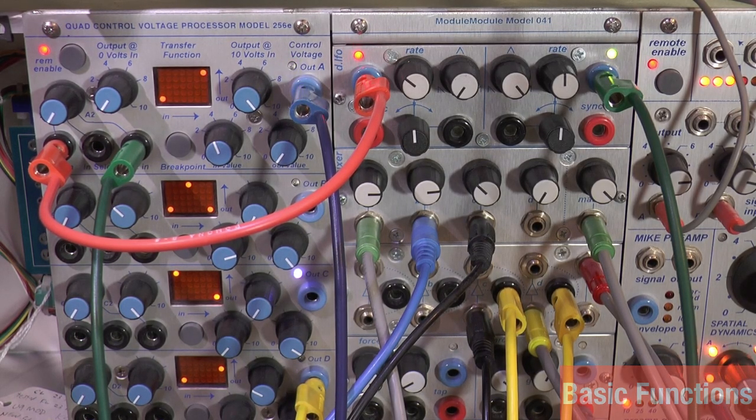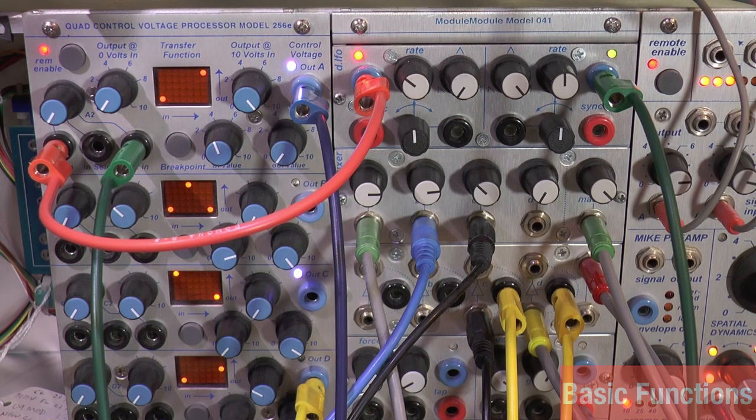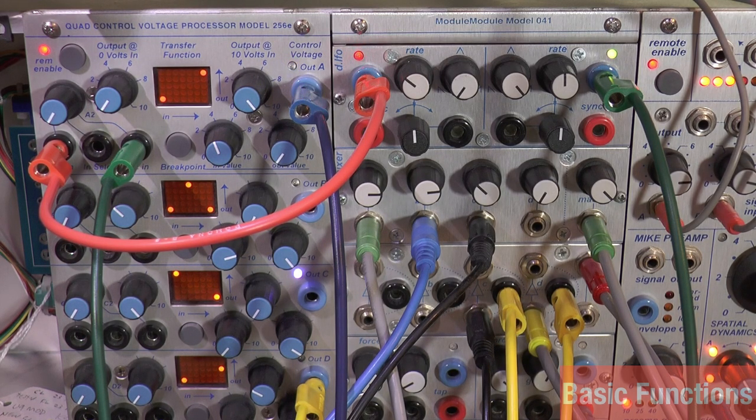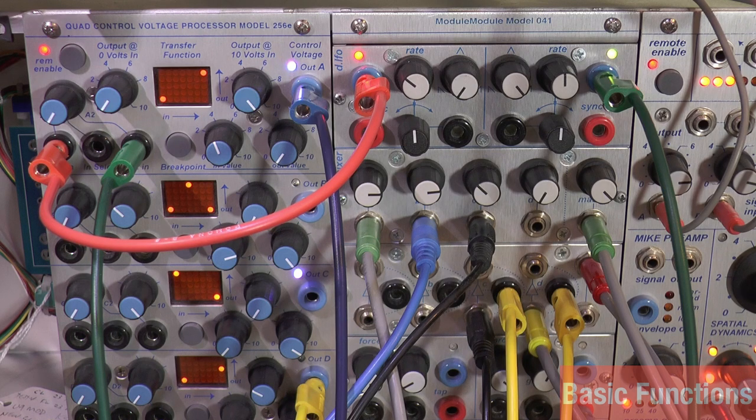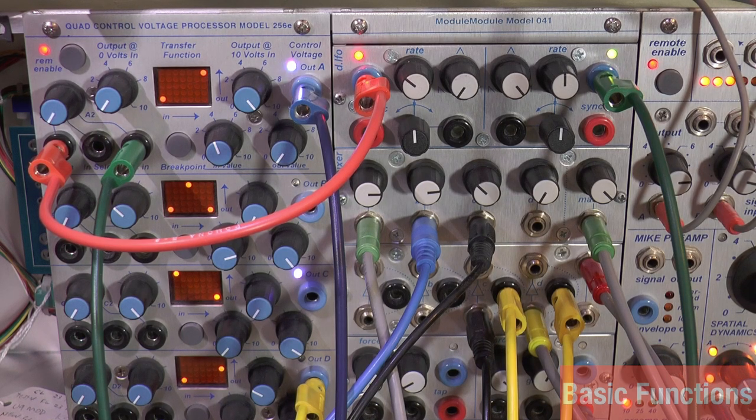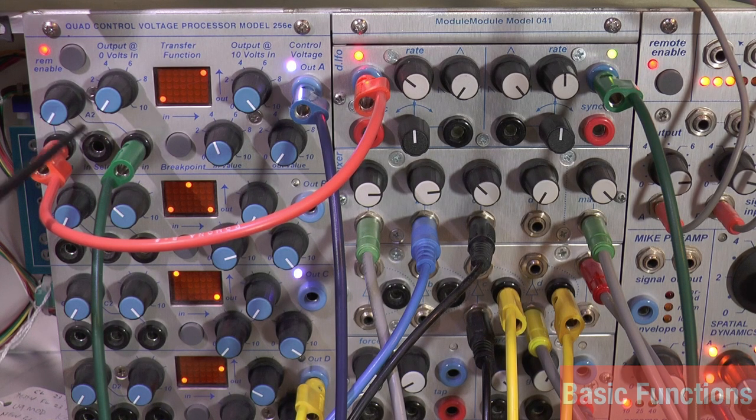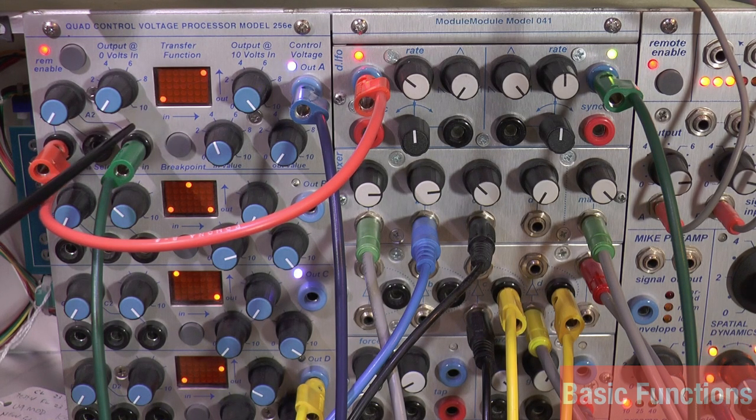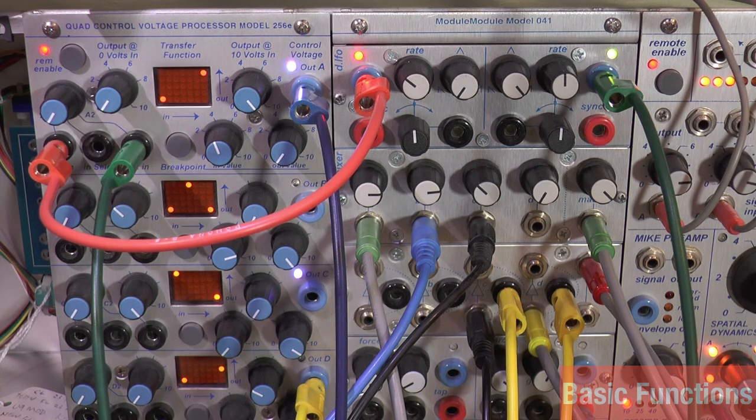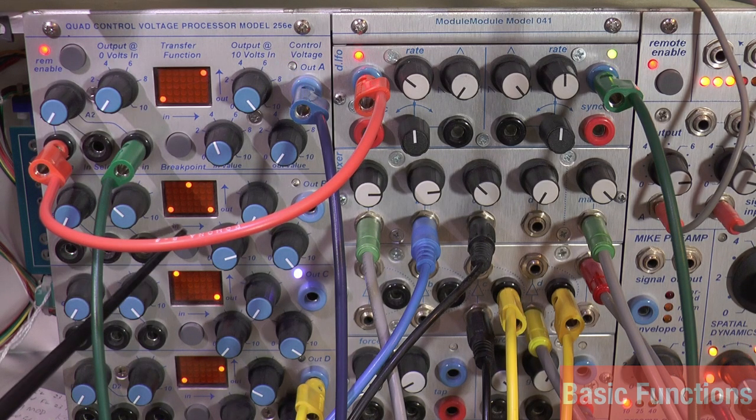Okay, the 256e Buchla control voltage processor - a totally digital module, very cool for CV processing. I will show some practical applications for it. It is currently set up showing four windows of the most commonly used applications. This is just set to direct pass through, so what comes in is what comes out.